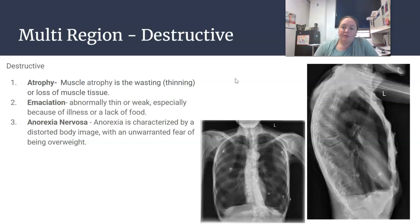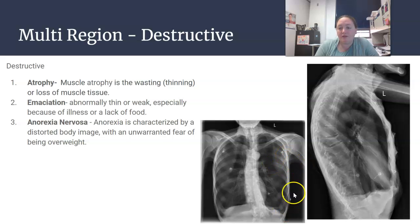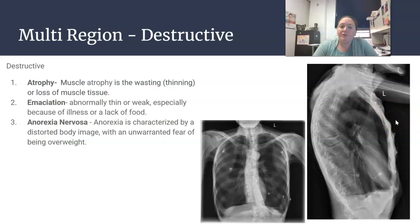As you can see from the radiographs included here, the minimal soft tissue that you can visualize is significant — we're not seeing a lot of soft tissue surrounding this anatomy, it's really straight to the bone. So destructive multi-region pathologies like atrophy are making tissue smaller or thinner.